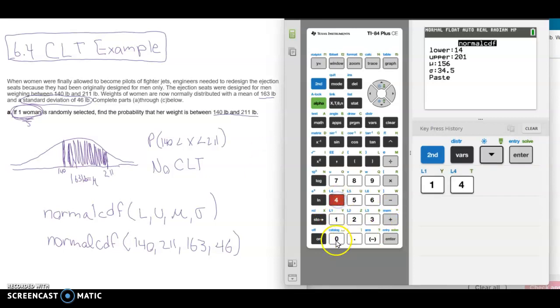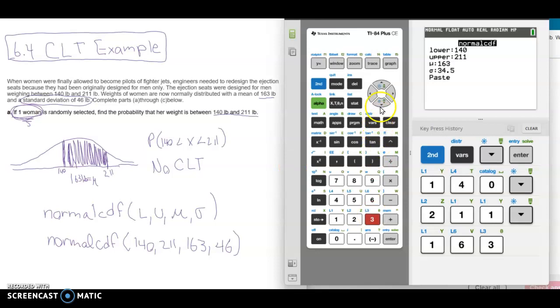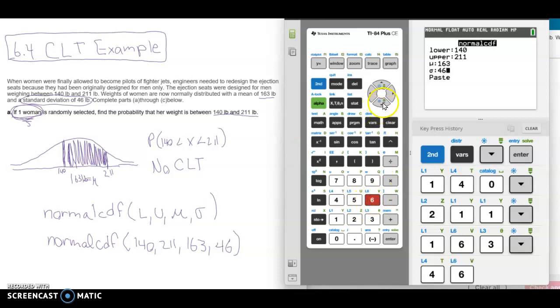And you want to put in the numbers that we wrote down. So 140 is the lower limit. The upper limit is 211. The mean is 163. And the standard deviation is 46. Just double check your numbers. And you can paste, press enter, you might have to press enter again.